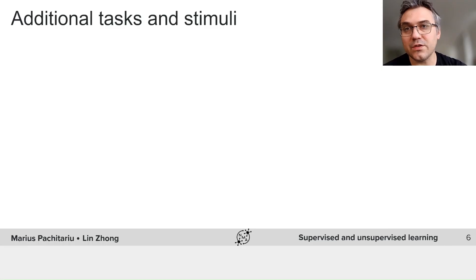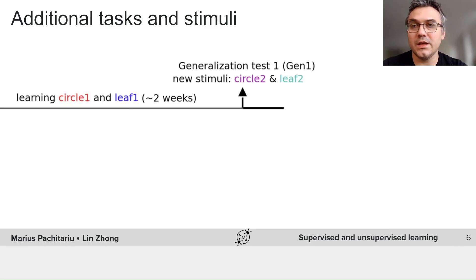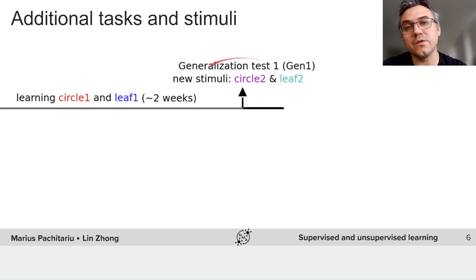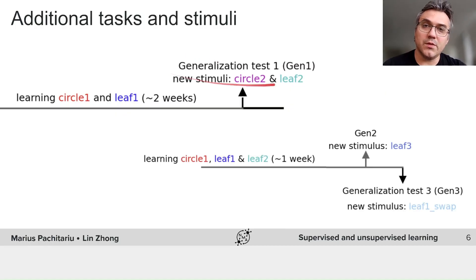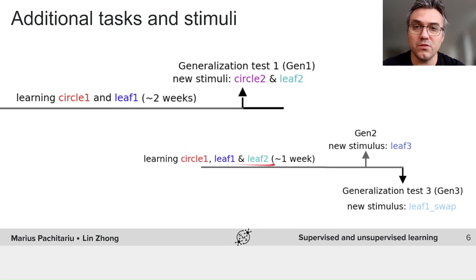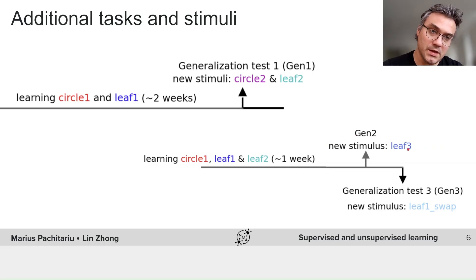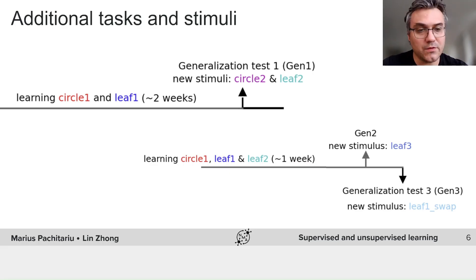We have additional tasks and stimuli as well. After training animals for two weeks with these stimuli, Lin introduces a generalization session where new stimuli are introduced to see how the mice respond behaviorally, as well as how the neurons respond to these new stimuli. Continuing in the same animals, Lin also trains them to distinguish between leaf 1 and leaf 2 — two different exemplars of the leaf category — for about a week. After this week, a new stimulus, leaf 3, is introduced, and there is another generalization test where the first and second half of the leaf corridors are swapped. This provides multiple tests, both behavioral and neural, around which one can form various interesting hypotheses.